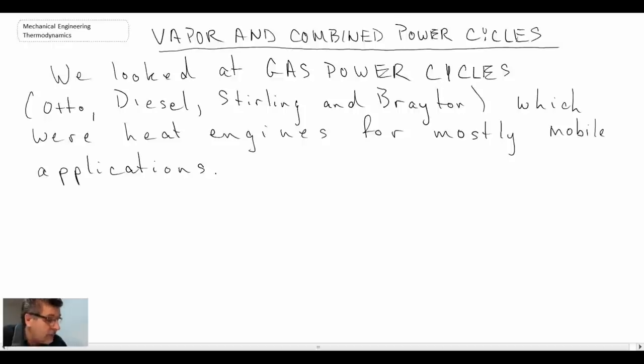These are gas power cycles that are quite often used in mobile applications, be it an automobile, a ship, or aircraft in the case of a Brayton cycle. So we're now going to be looking at vapor power cycles.